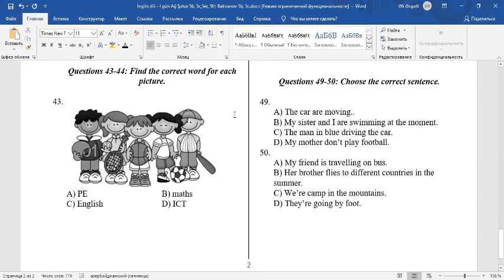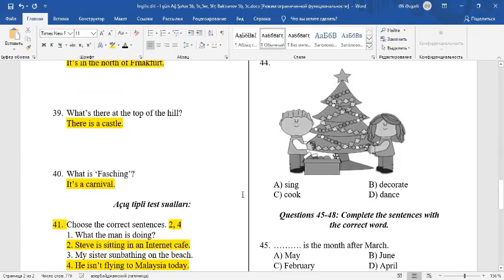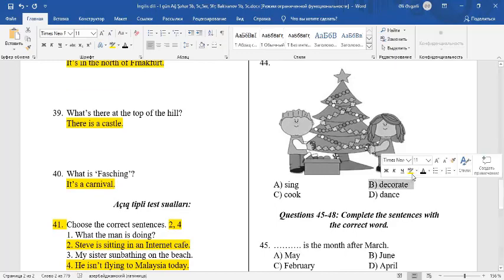Questions 43 and 44 are based on the pictures. Look at this picture. You can see children and they have balls, racket and bats in their hands. They play sport. Children play sport in PE classes, physical education. In this picture, children are decorating a Christmas tree. The answer is B. Decorate.